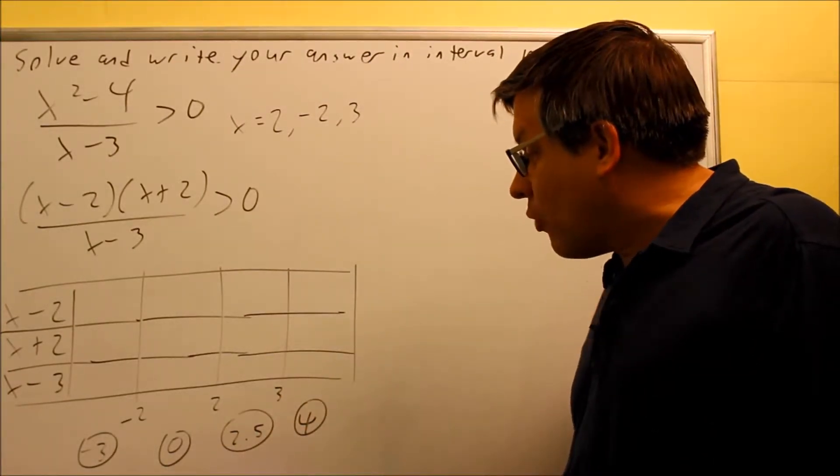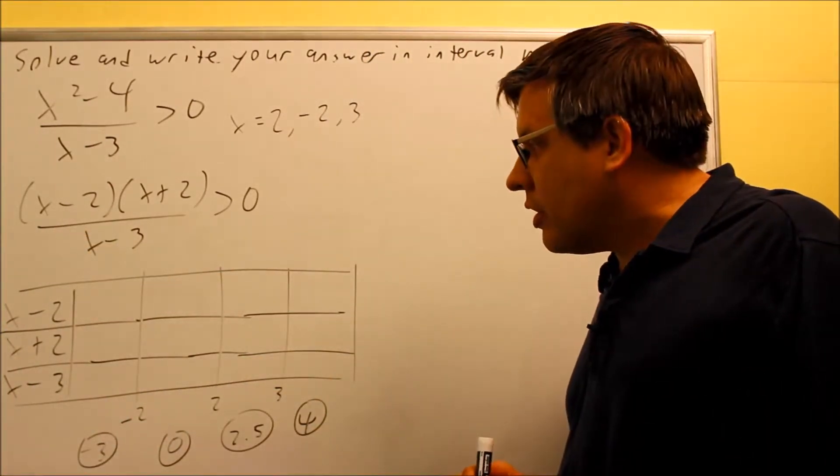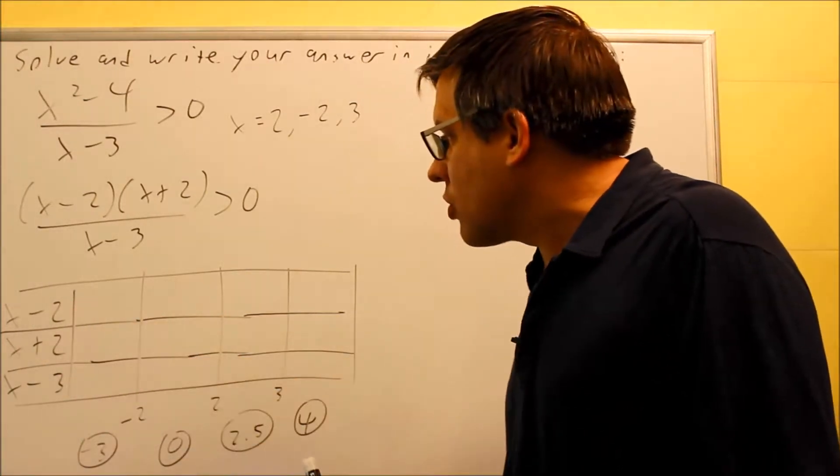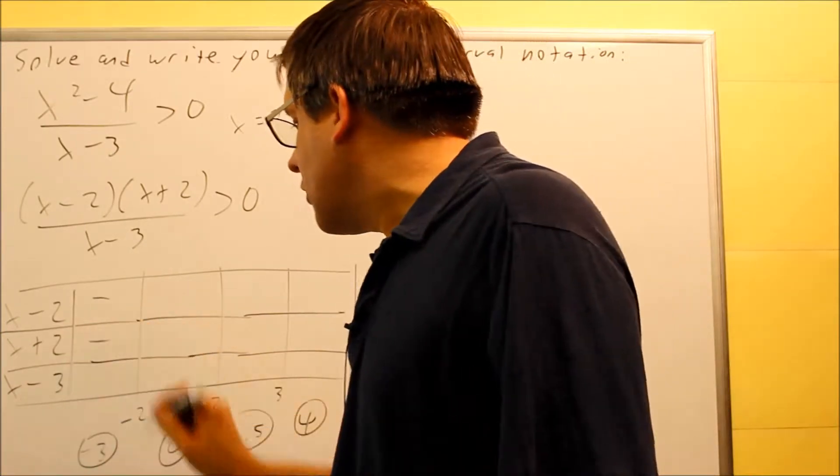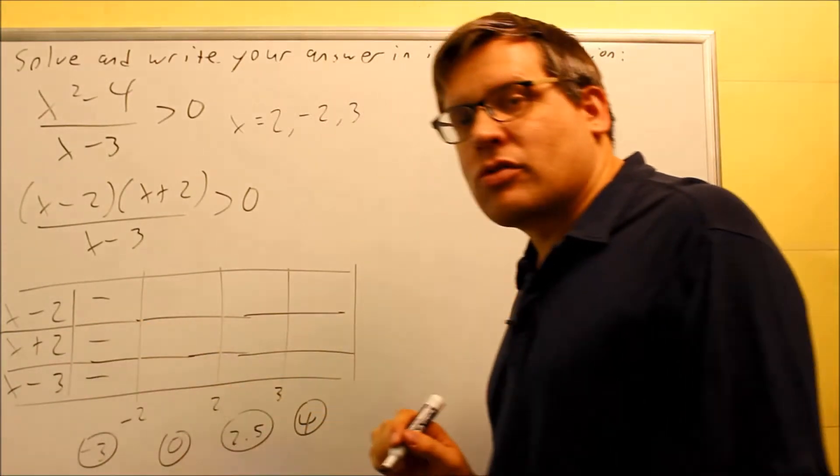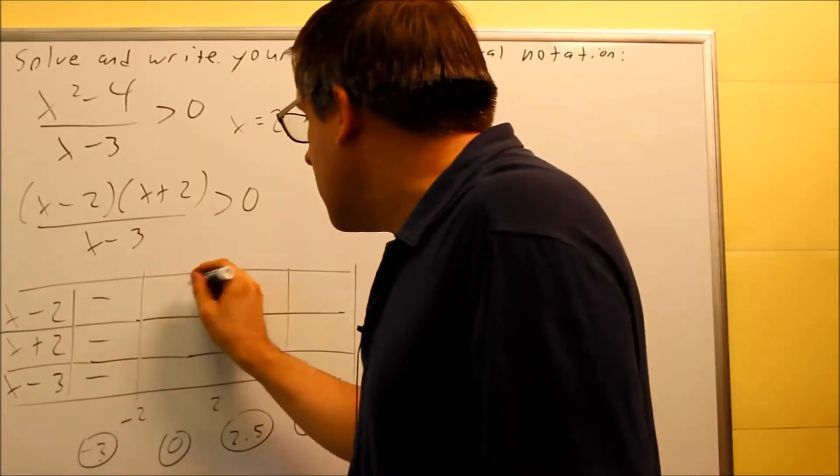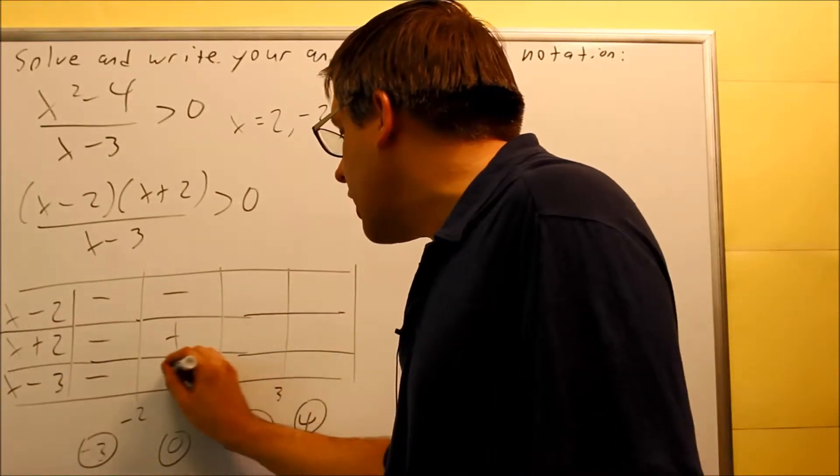So now that we have that, we can put all these numbers into the ones on the left-hand side over there, and we're going to indicate whether we get a plus or a minus. Negative 3 into the first one: Negative 3 minus 2 is negative. Negative 3 plus 2 is negative. Negative 3 minus 3, that's negative also. Next, we put 0 into all these. 0 minus 2 is negative. 0 plus 2 positive. 0 minus 3, that's a negative number.